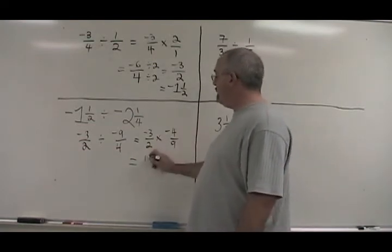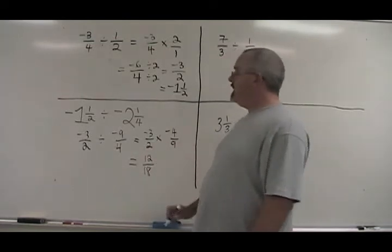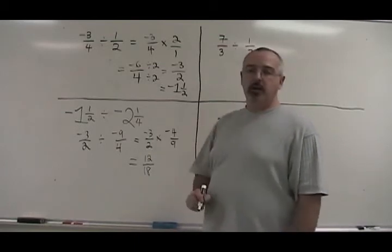Negative 3 times negative 4 is positive 12. 2 times 9 is 18. We no longer have a negative. The two negative signs cancelled because we multiplied negative by negative.